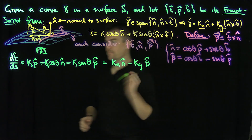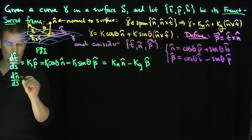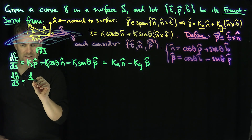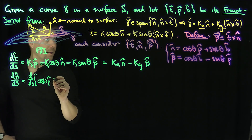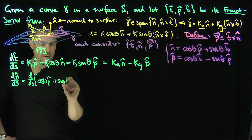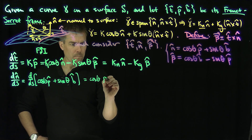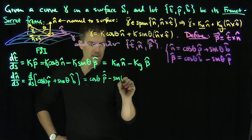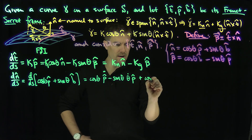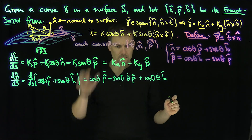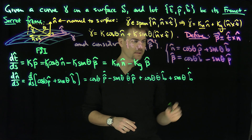Now let's find dn/ds. That's d/ds of cosine(theta) p-hat plus sine(theta) b-hat. Applying the product rule: cosine(theta) p-hat-dot minus sine(theta) theta-dot p-hat plus cosine(theta) theta-dot b-hat plus sine(theta) b-hat-dot. Applying Frenet-Serret: p-hat-dot equals negative kappa t-hat plus torsion b-hat, and db/ds equals negative torsion p-hat.